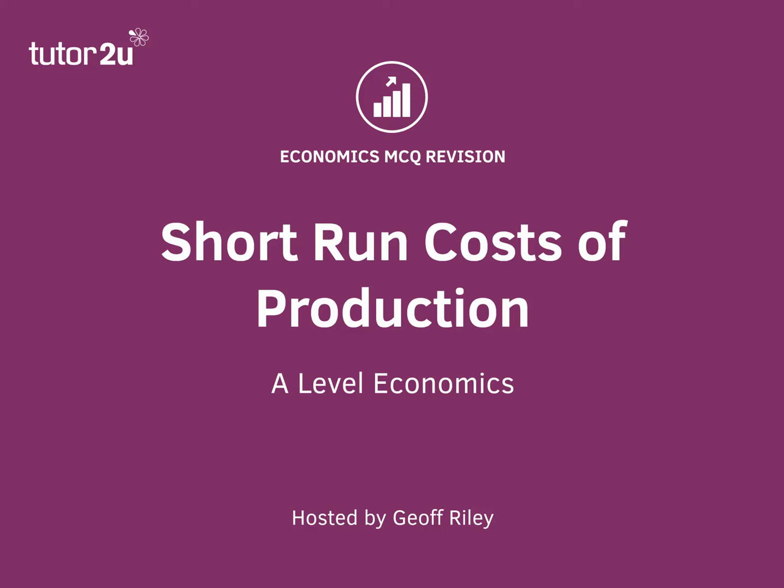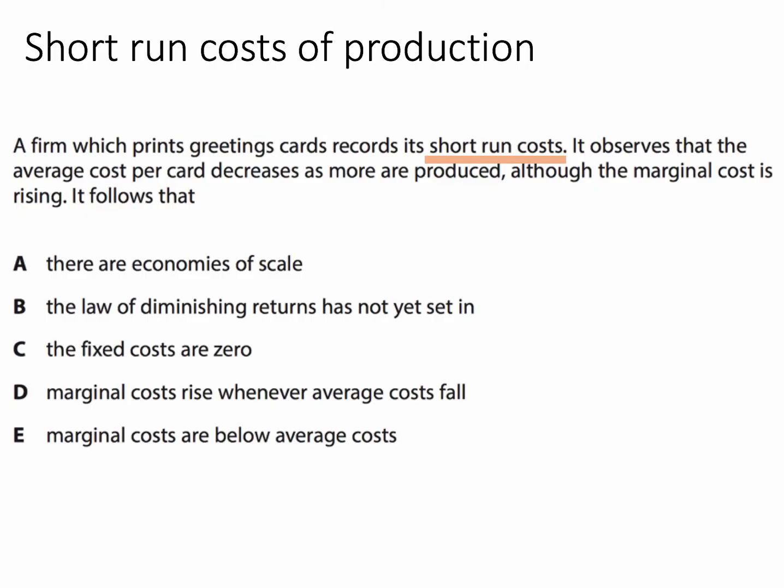Welcome — let's take a look at another multiple choice question as part of our MCQ revision series. This time it's a Year 1/Year 2 microeconomics question focusing on short-run costs of production. A firm which prints greetings cards records its short-run costs. It observes that the average cost per card decreases as more are produced, although the marginal cost is rising. What does it follow? There are five options.